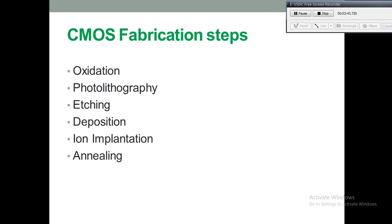The oxidation process is used to make a silicon dioxide (SiO2) layer on the silicon substrate. The SiO2 layer serves as a mask against implant or diffusion of dopant into the silicon, and it also isolates one device from another. The photolithography process is used to transfer a desired pattern — the mask — onto the surface of the silicon.